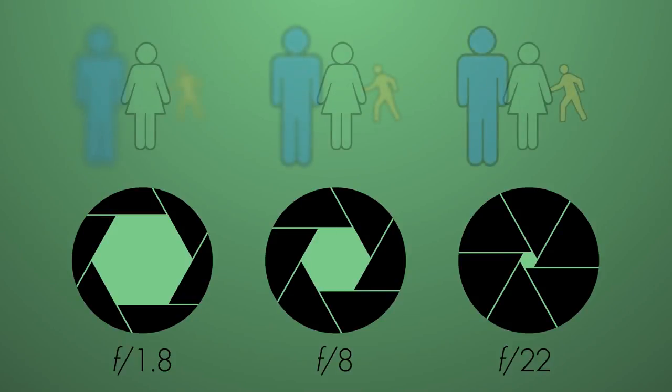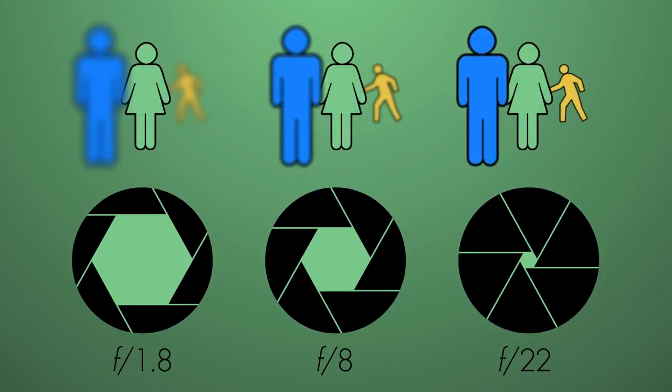Additionally, aperture also controls the depth of field. If we set our focus point on the woman when we create this image, and the standing man on the left is closer to us than the woman while the walking man on the right is farther away from us than the woman, we will get these results for each f-stop.